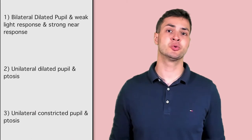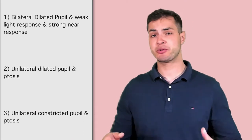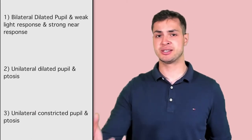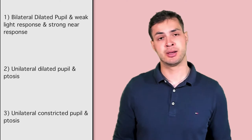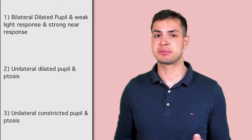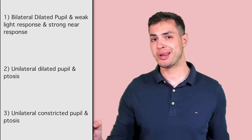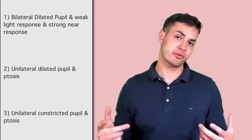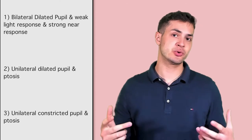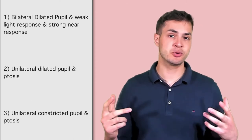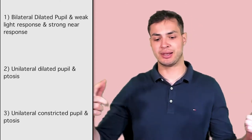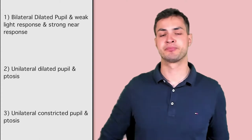Question 1: someone comes in with bilateral dilated pupils with a weak response to light but a really strong response to near. What could that be? Number 2: someone comes in with a unilateral dilated pupil and ptosis. Number 3: unilateral constricted pupil and ptosis. Write down your answers, pause the video and let's get back to it.